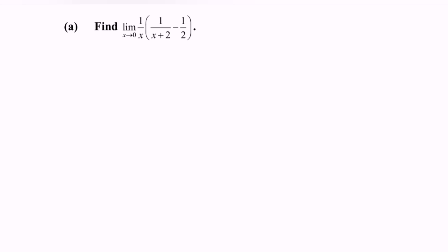Find the limit when x approaches 0 for the function 1 over x multiplied with 1 over (x plus 2) minus 1 over 2.